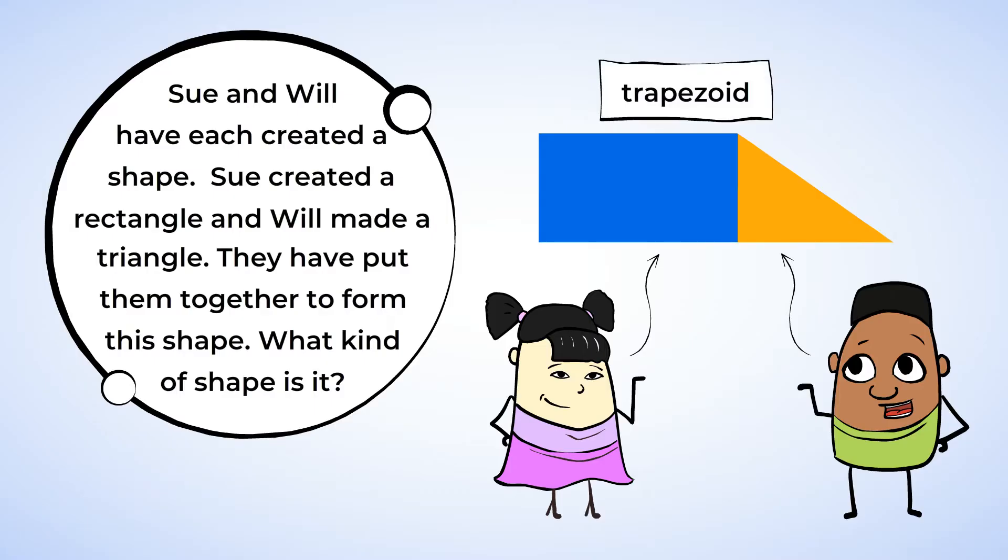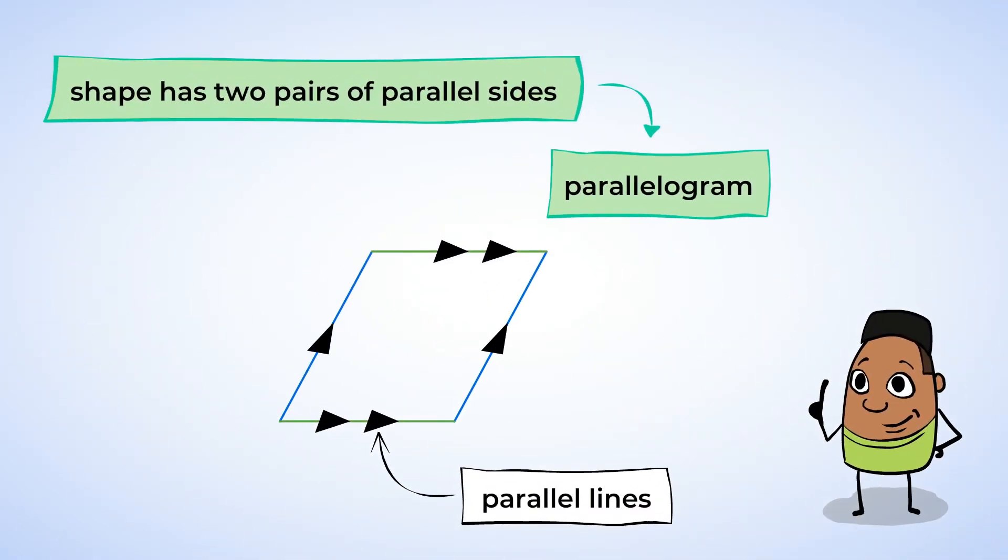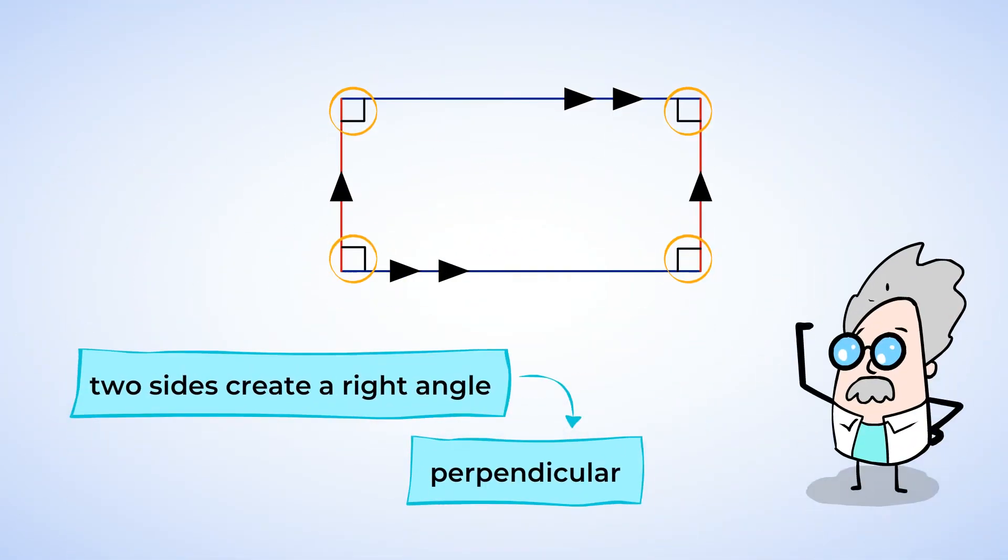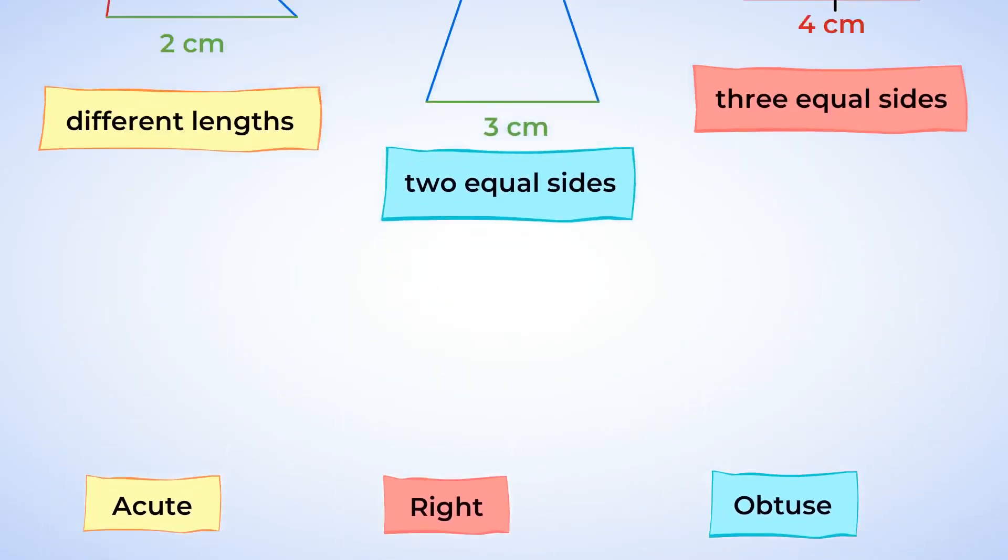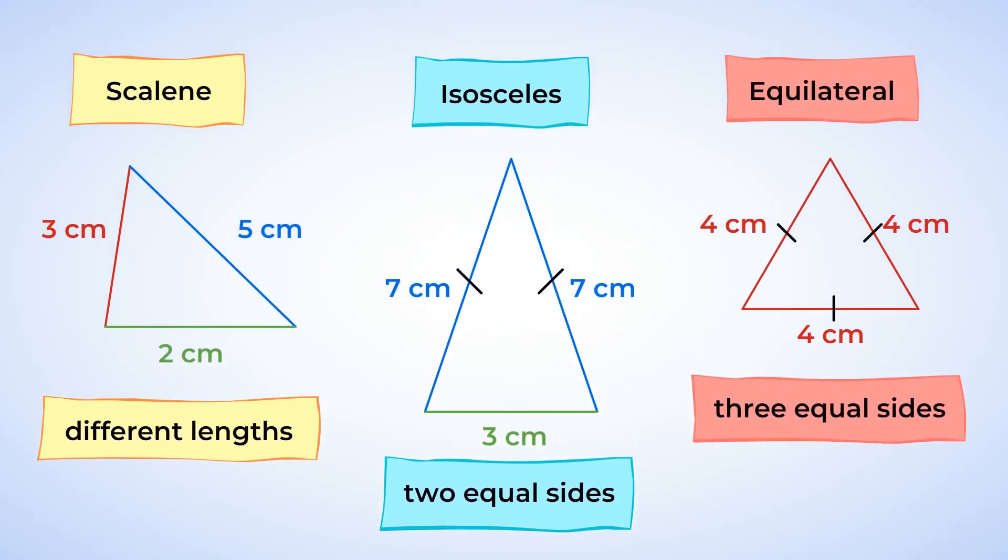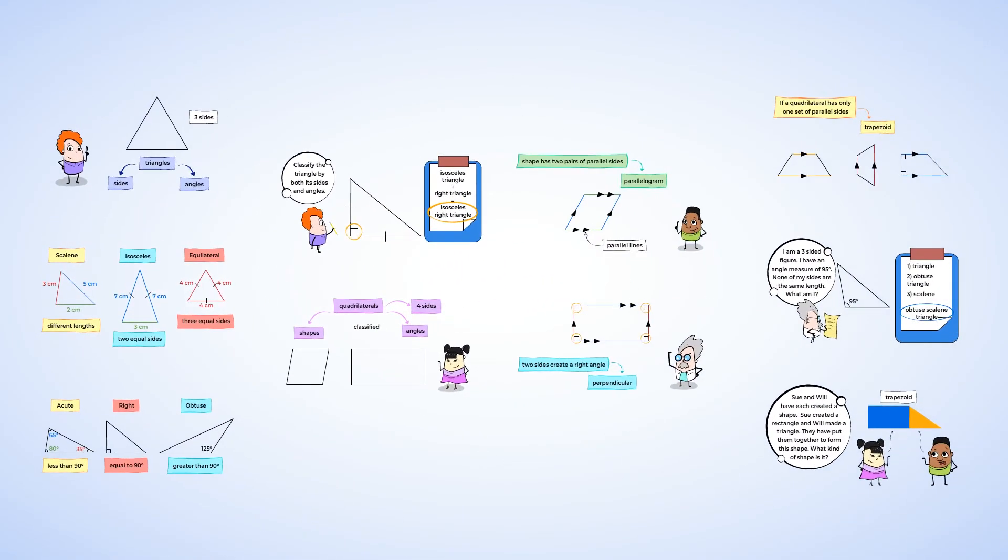You've done some mighty geometry work in this lesson. You used your knowledge of parallel and perpendicular lines to classify quadrilaterals. You also used angles to classify triangles as acute, obtuse, or right triangles, as well as their sides to classify triangles as scalene, isosceles, or equilateral. Great work, and I'm looking forward to the next lesson.